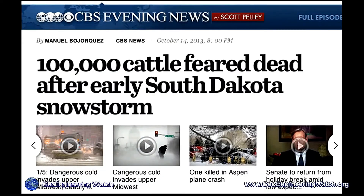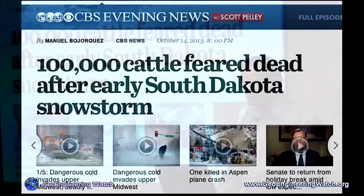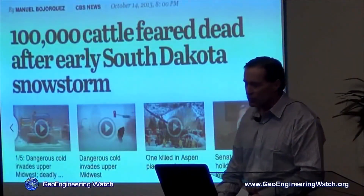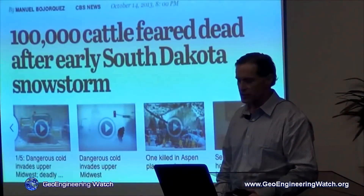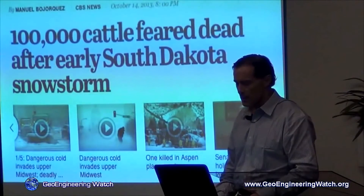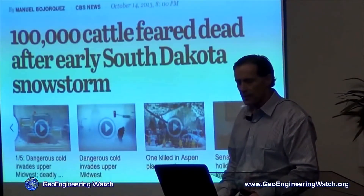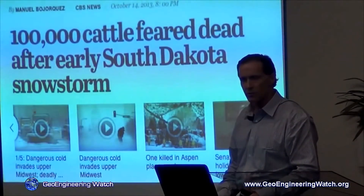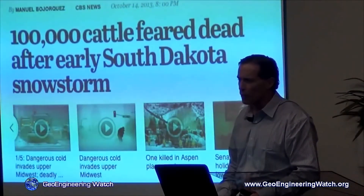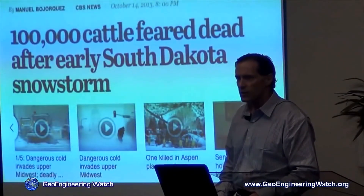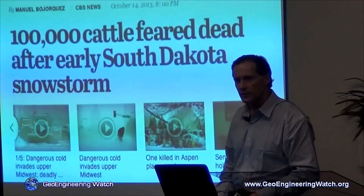This is a great example of a nucleated snowstorm. 100,000 cattle were feared dead after an early South Dakota snowstorm on October 4th of last year — up to 100,000 cattle died. How did that happen when we had temperatures that were in the 40s? How do cattle from South Dakota die with temperatures in the 40s?